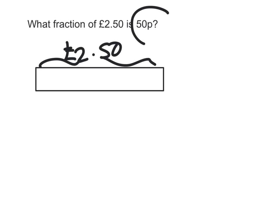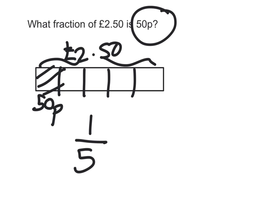And you want to see how many times 50p goes into that. Well, if I count up in 50ps, it'll take me five times to get up to £2.50. So, that amount is 50p, so that is one-fifth of £2.50.